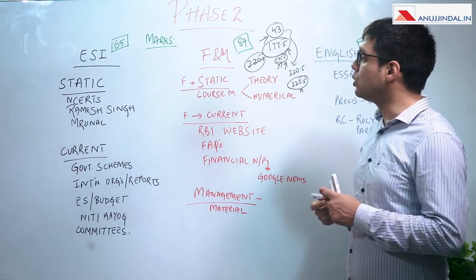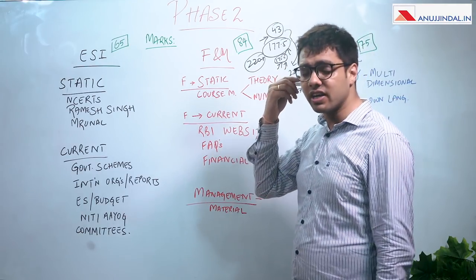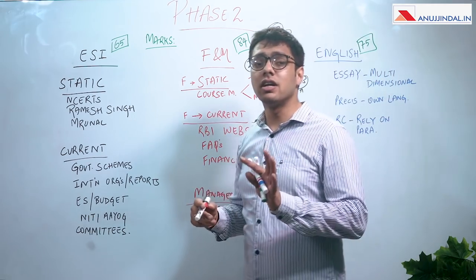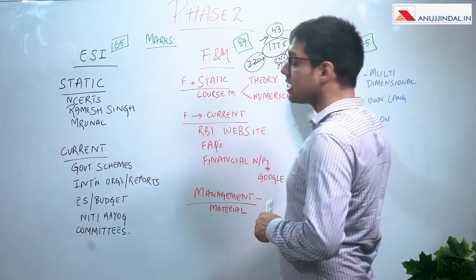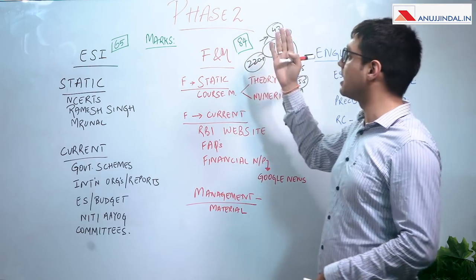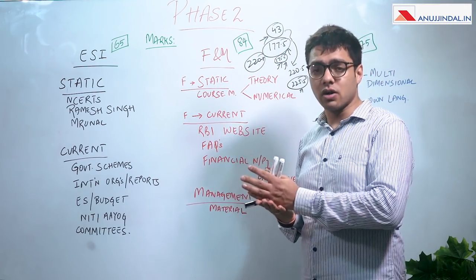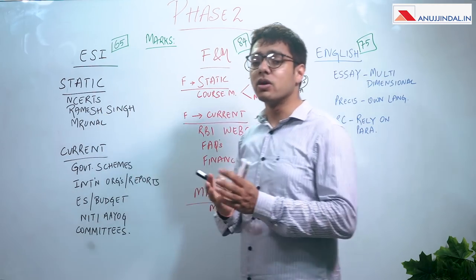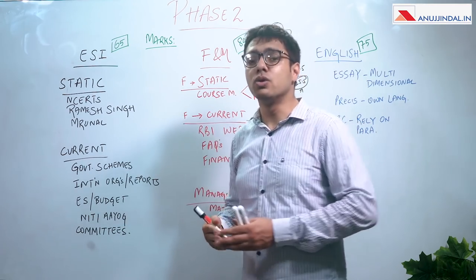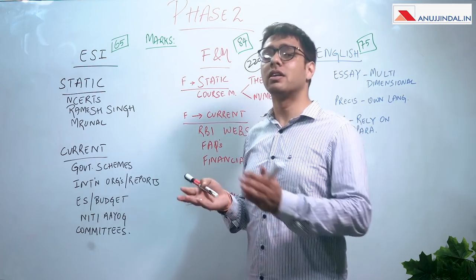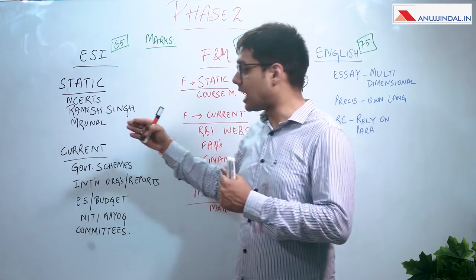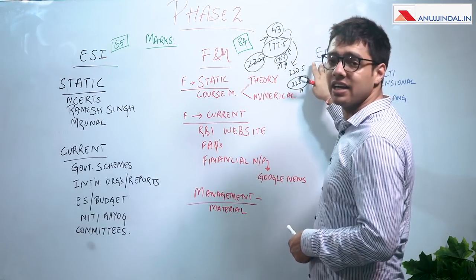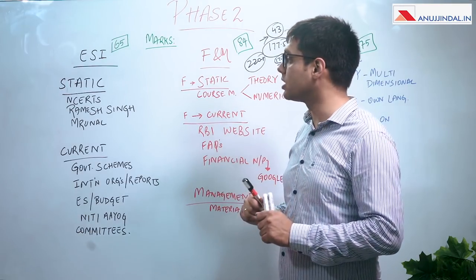Finance and management and English are two sections which are very, very scoring and can take your score much above the cutoff. ESI is different because the coverage is way too broad — either you're ready to do that hard work of broad coverage, or you have to be a little lucky on the day of the paper. ESI generally gets a bit tricky, but whatever hard work you put into finance and management and English will really pay off.